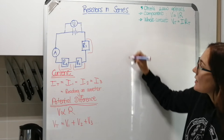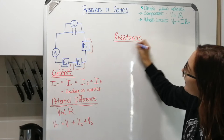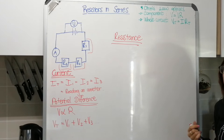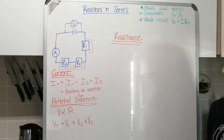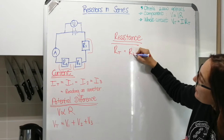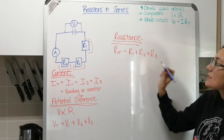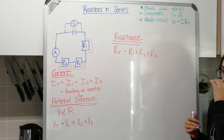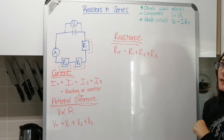The third and last thing to talk about is resistance. The total — or equivalent — resistance of a series circuit is simply equal to the sum of all your resistors. So if you want to know the total resistance, you just add together the first, second, and third resistors. That's how current, potential difference, and resistance work in a series circuit. It's different for parallel, so stay tuned for that.